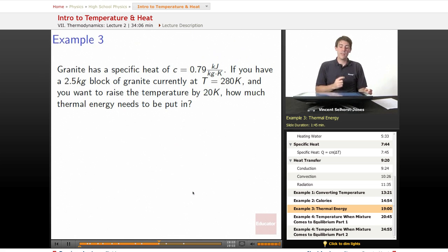All right, granite. Granite has a specific heat of 0.79 kilojoules. Notice this is kilojoules, not joules. If you have a 2.5 kilogram block of granite currently at temperature 280 Kelvin, and you want to raise the temperature by 20 Kelvin, how much thermal energy needs to be put in?